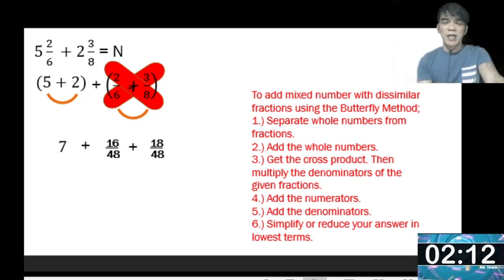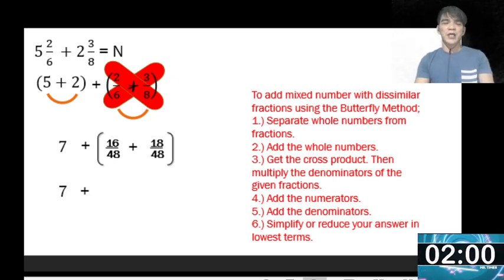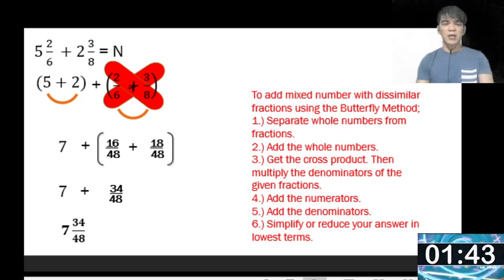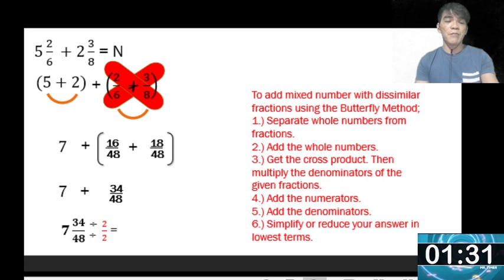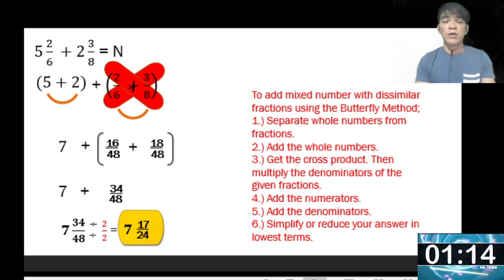From unlike fractions they are now similar, so we can add them. Copy the whole number 7. Add the numerators: 16 plus 18 equals 34, then copy the denominator 48. Our answer so far is 7 and 34 over 48. But 34 over 48 is not in lowest terms, so we simplify by dividing by the GCF, which is 2. So 34 divided by 2 is 17 and 48 divided by 2 is 24. Our final answer is 7 and 17 over 24.